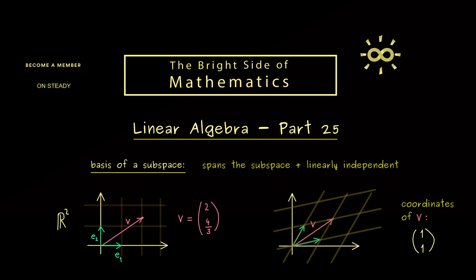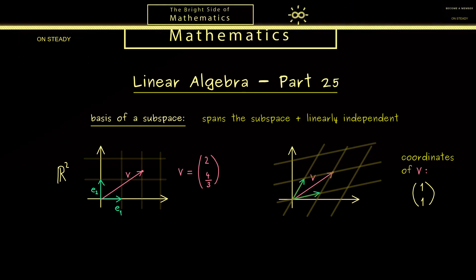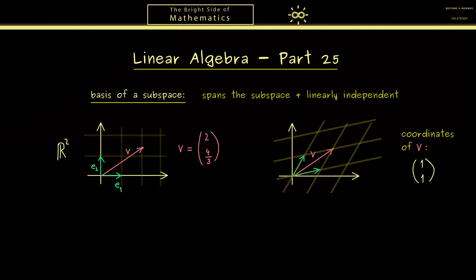However first let's write down the definition for coordinates in the general sense. So you have already seen it's not a complicated notion at all but we will need it for all calculations later. Now the assumptions we need here is that we have a general subspace in Rⁿ, we call it U and B should be a basis of U.